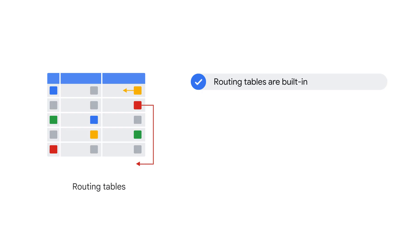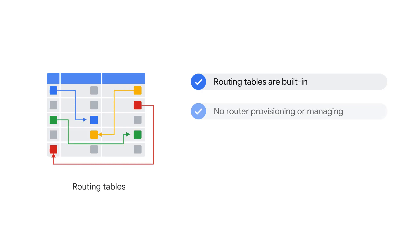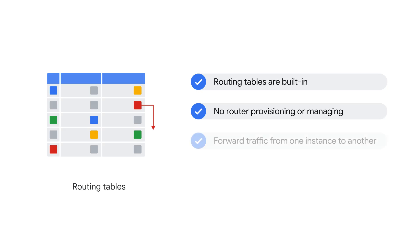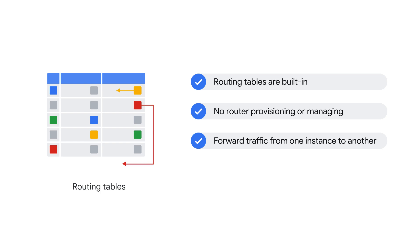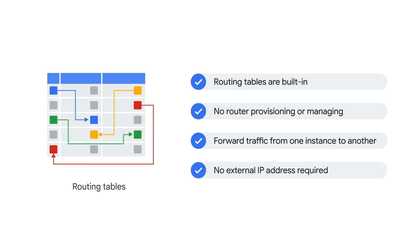Like physical networks, VPCs have routing tables. Routing tables are built in, which is a dream because you don't have to provision or manage a router. These routing tables forward traffic from one instance to another within the same network, across subnetworks, or even between Google Cloud zones, without requiring an external IP address.